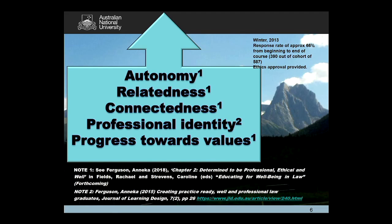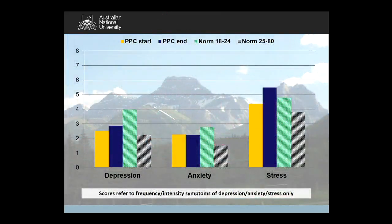The US studies were looking at negative wellbeing outcomes happening at law school and the undermining of these factors as the cause. The exciting thing our study showed was that over the particular course we were looking at, we were seeing statistically significant increases in relatedness, competence, and professional identity, with stability in autonomy from a high starting base. This was looking at students from the beginning to the end of their 18-week course — the core course within the Graduate Diploma in Legal Practice — and we appear to have either reversed or at least stabilised the trends in law student wellbeing being reported elsewhere.